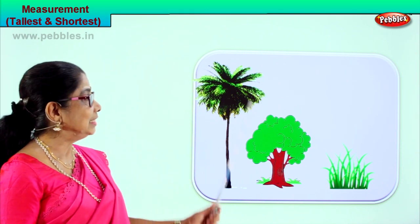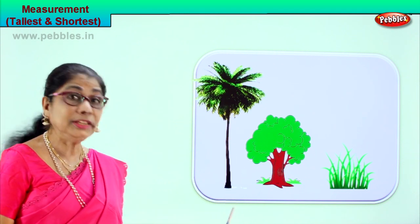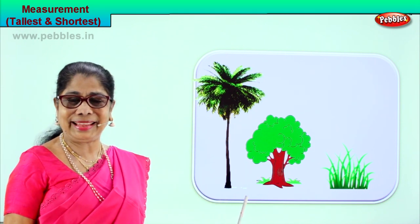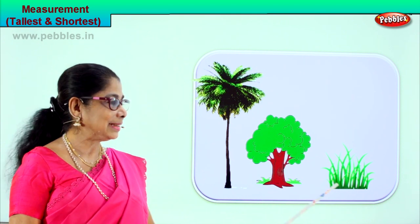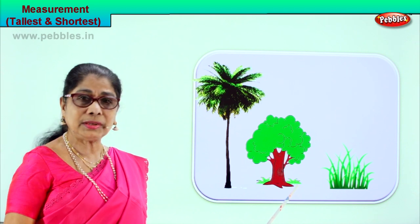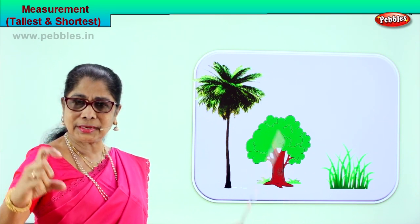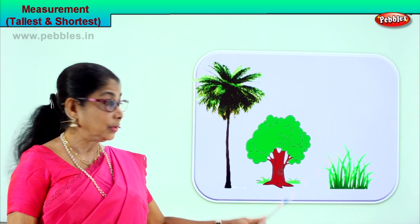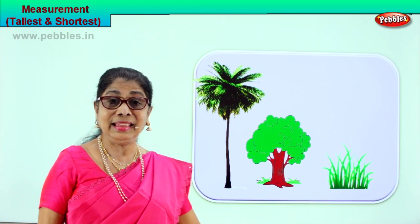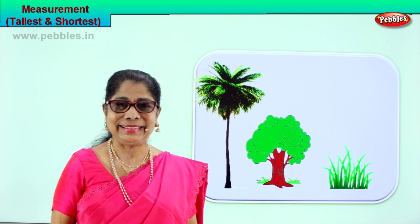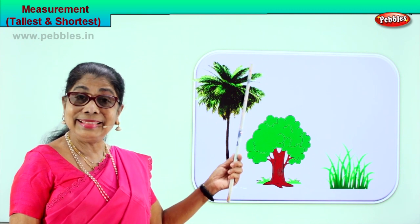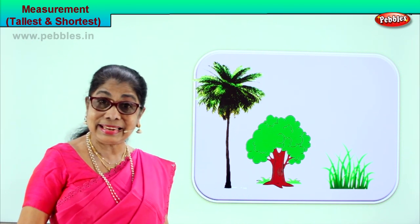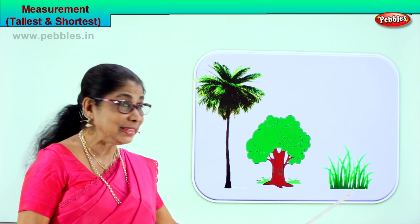The palm tree or coconut tree is the tallest in this picture — so you learnt the tallest tree. Grass is always tiny — that's the shortest. We are comparing: shortest, little tall, tallest. So grass is the shortest of the three items we see here. Which is shortest? The grass is shortest. Tallest? The palm tree or coconut tree is the tallest. Did you observe? It's very interesting. You learnt two measurements: shortest and tallest.